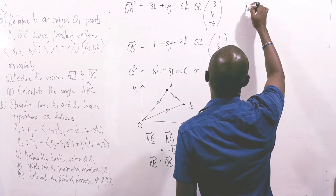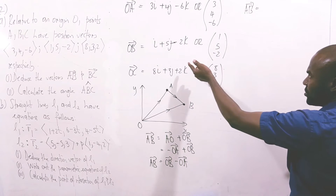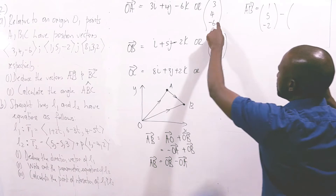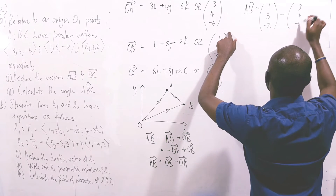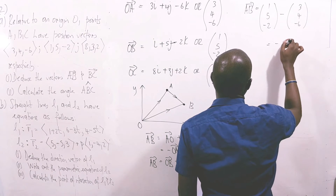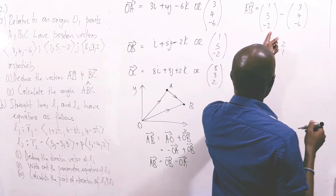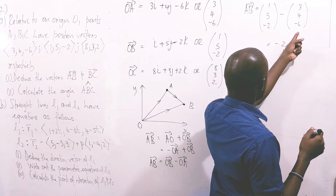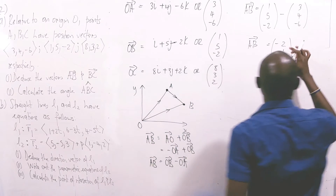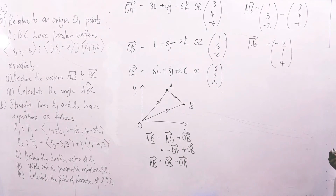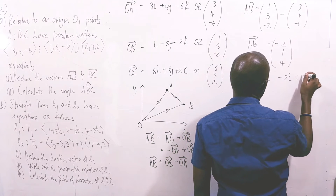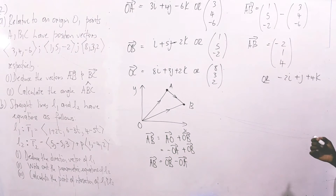So AB = OB - OA. In column vector form: (1, 5, -2) minus (3, 4, -6). Subtracting corresponding coefficients: 1 - 3 = -2; 5 - 4 = 1; -2 - (-6) = -2 + 6 = 4. Therefore AB in column vector form is (-2, 1, 4), or equivalently -2i + j + 4k.